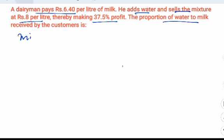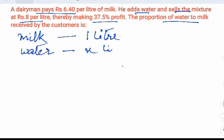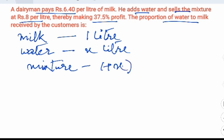So let us assume that in the mixture the milk is 1 liter and the amount of water he adds into it is x liter. So the mixture becomes 1 plus x liter.